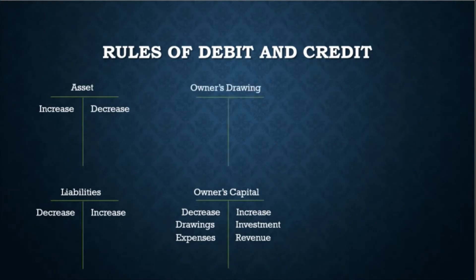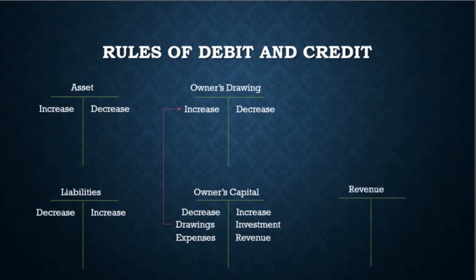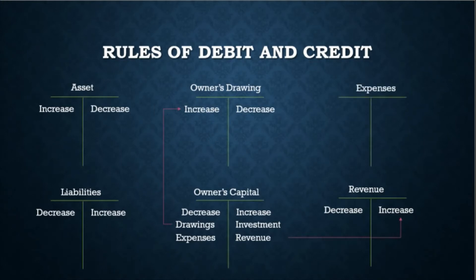For owner's drawing, since drawings appear on the left side of owner's capital, an increase in drawing is on the left (debit) side, and a decrease is on the right (credit) side. For revenue, since it appears on the right side of owner's capital, an increase in the revenue account is on the right (credit) side, and a decrease is on the left (debit) side. For the expense account, since expenses appear on the left side of owner's capital, an increase in expense is on the left (debit) side, and a decrease is on the right (credit) side.